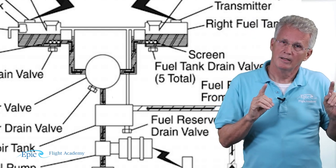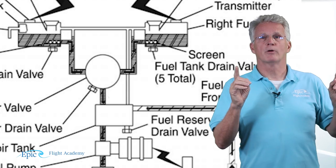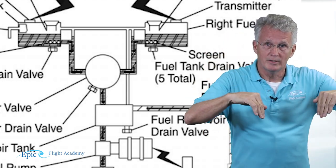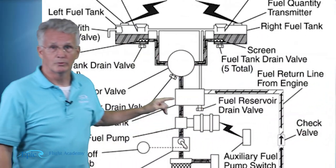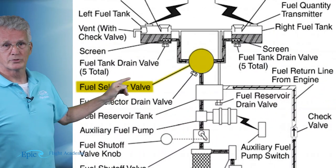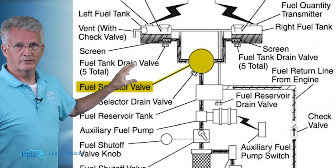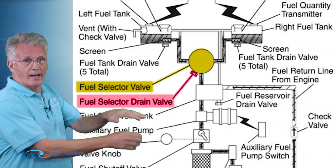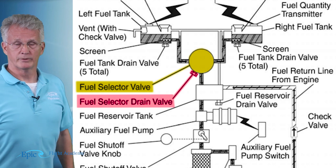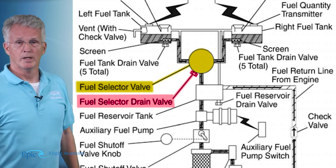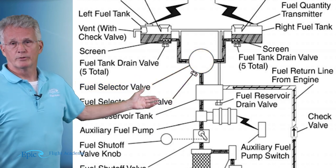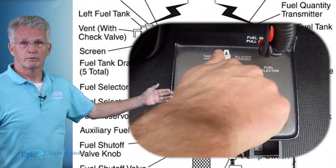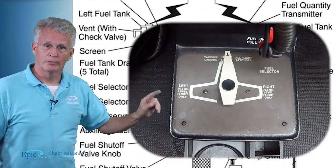From the tank the fuel flows by gravity down these lines to the fuel selector. At the fuel selector we see a drain valve, which is accessed from the bottom of the airplane when we're taking fuel samples. The fuel selector on the 172 will allow you to select left, right, or both tanks.